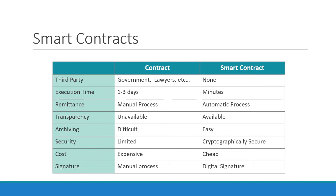Here we can highlight the major differences between a contract and a smart contract. In the smart version, a third party is not needed. Execution can be achieved in minutes, with automatic remittance and high transparency, which is not available in traditional contracts. Also, security is guaranteed by cryptography and digital signature. All these features make the smart contract cheaper in terms of cost with respect to normal contracts.